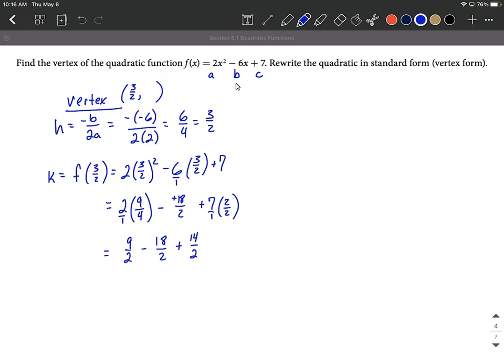Now we can just go ahead and combine our numerators together and keep that common denominator. So 9 minus 18, we're at negative 9, plus 14 is going to make positive 5. So 5 halves is going to be our y value for the vertex.